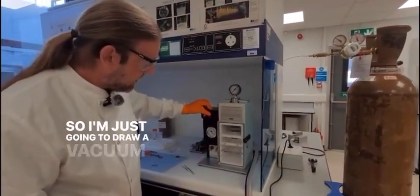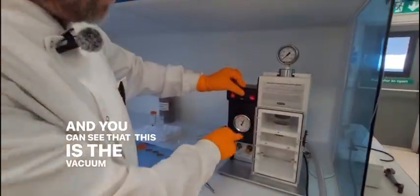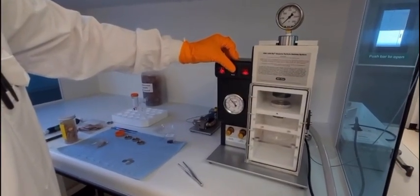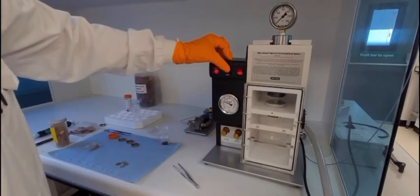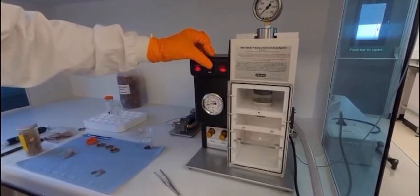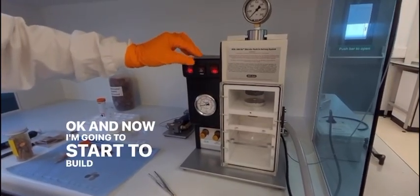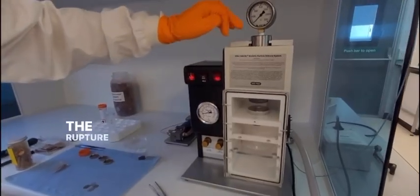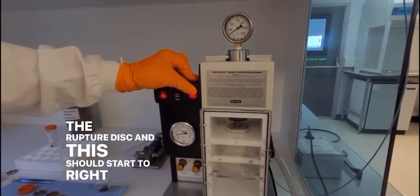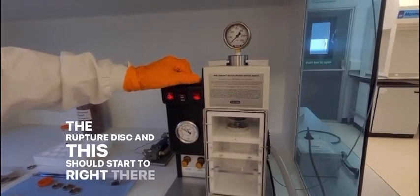So I'm just going to draw a vacuum now. And you can see that this is the vacuum I'm drawing. Okay. And now I'm going to start to build up the pressure behind the rupture disc. There we are.